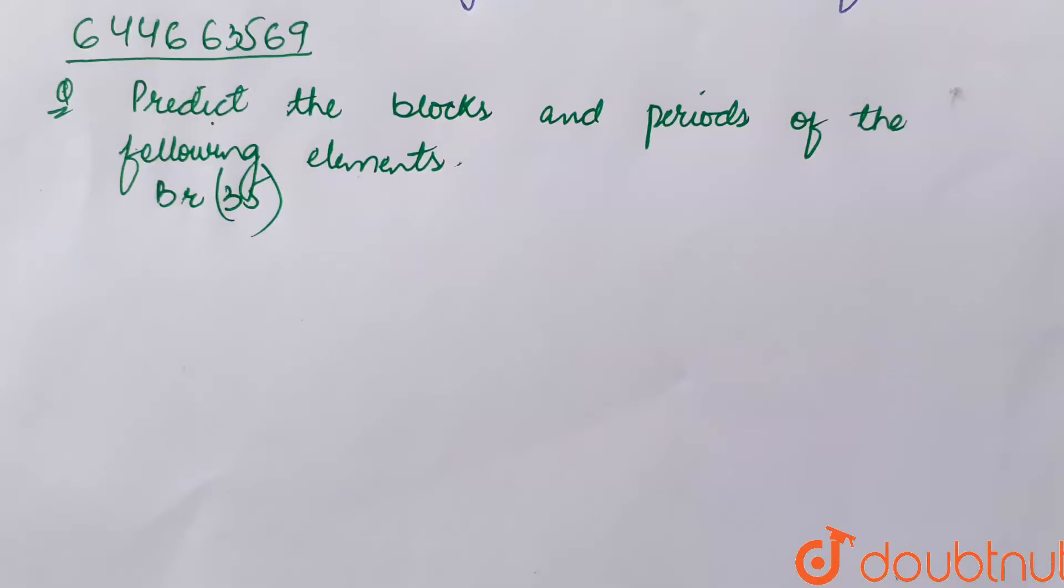Question says predict the blocks and period of the following elements. Element given is bromine has an atomic number 35.